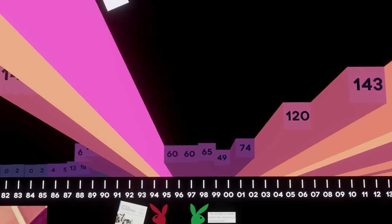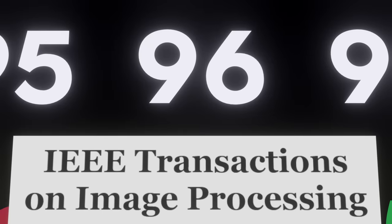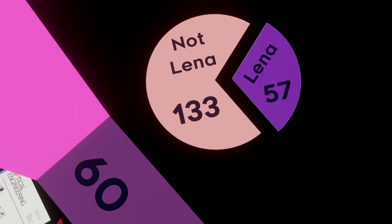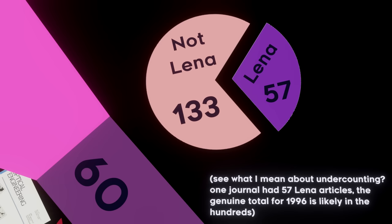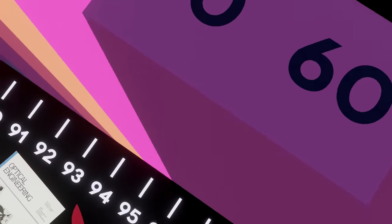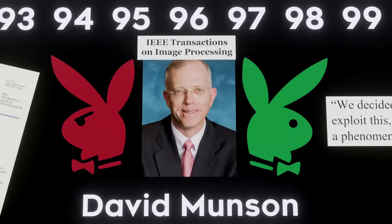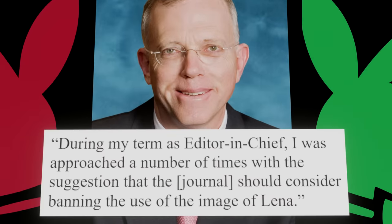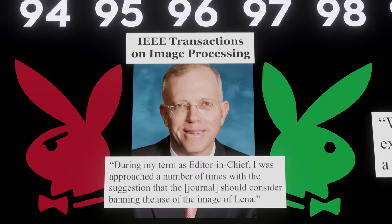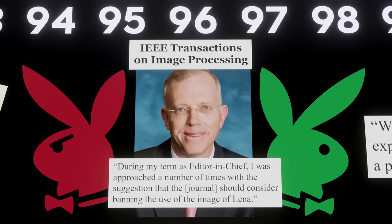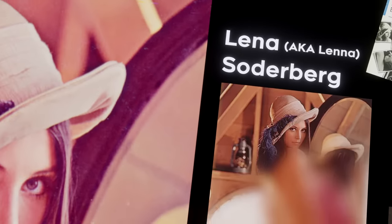Let's zoom in on 1996 and take a look at the journal IEEE Transactions on Image Processing. In just that year alone, 57 of their articles had Lena in it — 30% of all their articles, one in three. The editor in chief, David Munson, kicked off that year with an editorial: 'A Note on Lena.' During my term as editor in chief, I was approached a number of times with the suggestion that the journal should consider banning the use of the image of Lena.